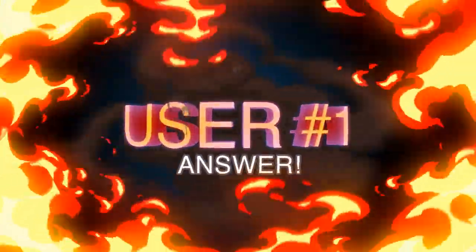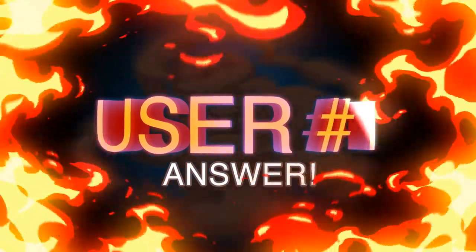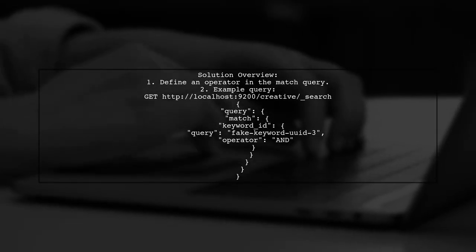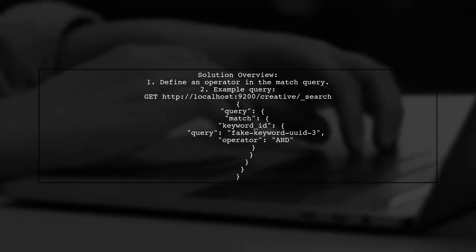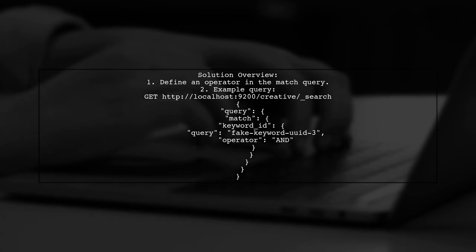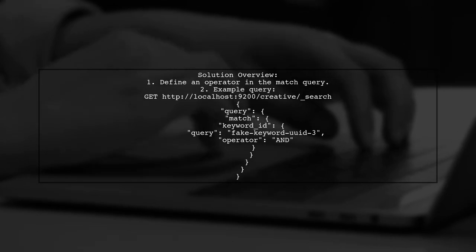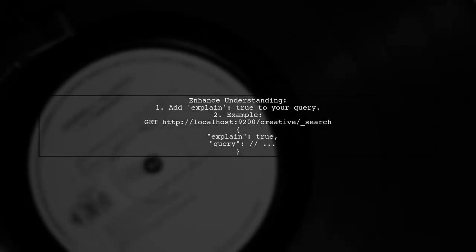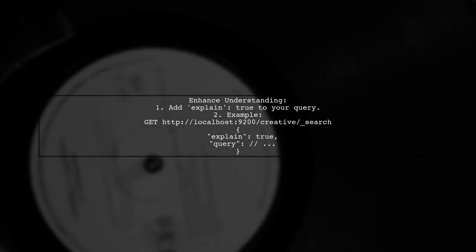Let's now look at a user-suggested answer. To match a string with a minus character in Elasticsearch, you can define an operator in your query. This approach was recommended by a user who found it helpful. For deeper insights into how the query works, you can add an explain parameter to your request, which will help you analyze the results more effectively.